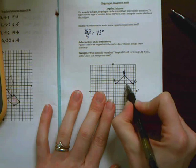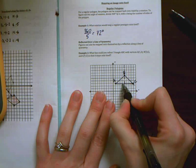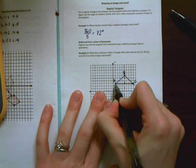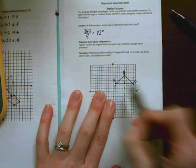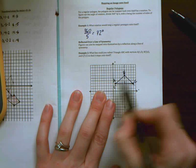So when I reflect it it's going to be 1, 2, 3, 4 spaces away on this side, so that'll be C prime.